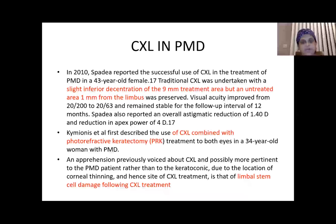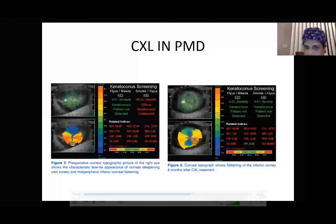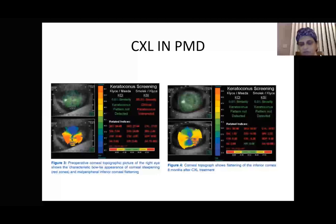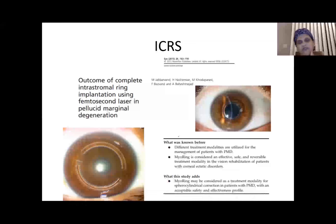CXL has been combined with PRK and with corneal stromal rings. Topography shows CXL working well with flattening of the inferior cornea post-CXL — this is an 8-month follow-up image. For intracorneal ring segments, options like INTACS, Kera rings, and Mayo rings have been used in PMD, with the largest series of 15 patients using Mayo rings considering it an effective, safe, and reversible treatment.